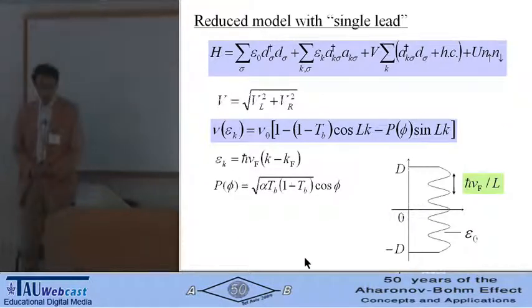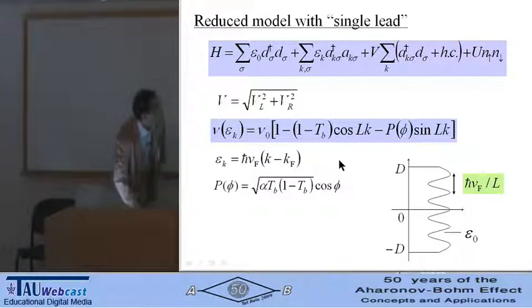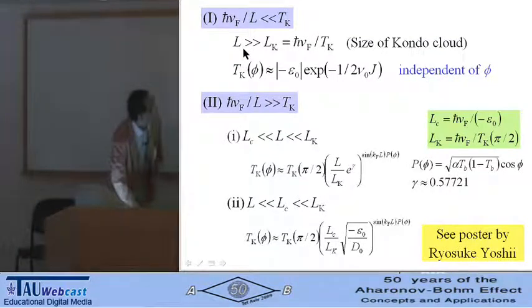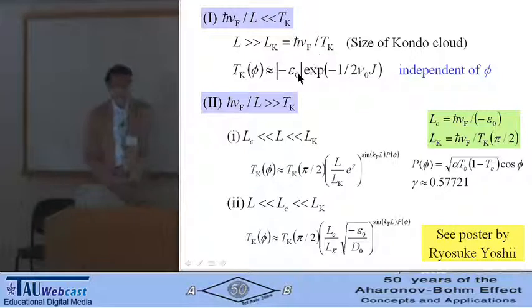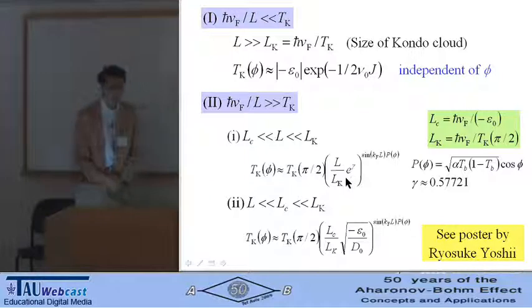First, we make the reduced model with single lead. In this case, density of states oscillates with this period, Fermi velocity over ring size. When this period is smaller than Tk, or ring size is much larger than the size of the Kondo cloud, Kondo temperature is independent of the magnetic flux. But otherwise, Kondo temperature depends on the magnetic flux. For the detail, please see the poster by Ryosuke today.